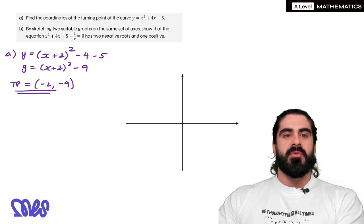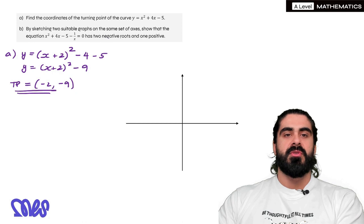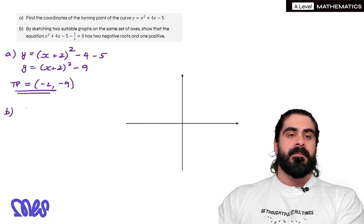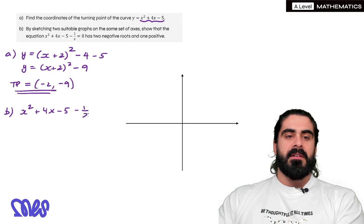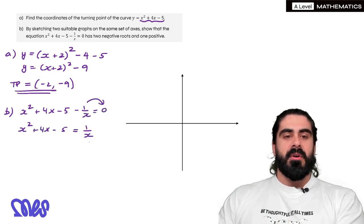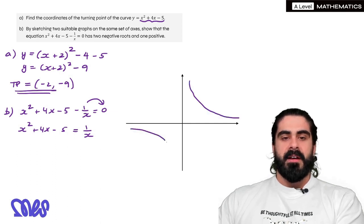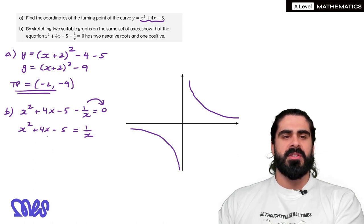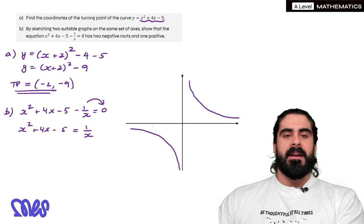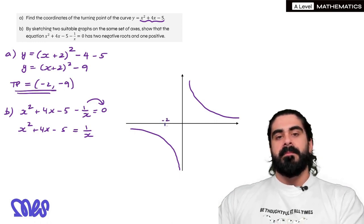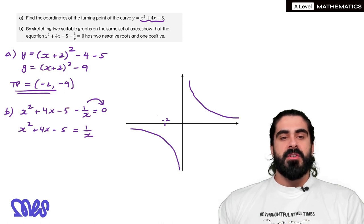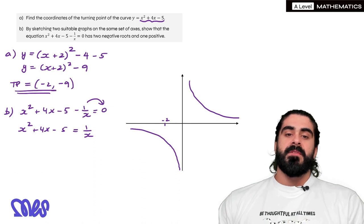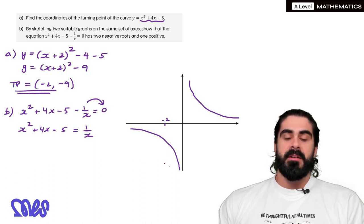Part b says by sketching two suitable graphs on the same set of axes, show that the equation x squared plus 4x minus 5 minus 1 over x equals 0 has two negative roots and one positive. We want to utilize part a, so we move the 1 over x over, and we need to sketch both graphs. Now 1 over x is nice and easy — we did that in the previous episode. The turning point of the quadratic is at minus 2, minus 9. At x equals minus 2, if you sub into 1 over x you get minus a half. So minus 9 is much, much lower, meaning the turning point of the quadratic is well below the reciprocal graph at that x value.